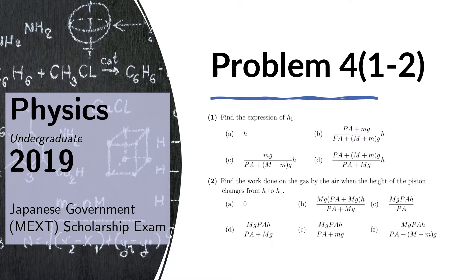For Question 1, we are asked to find the expression of H1. For Question 2, we are asked to find the work done on the gas by the air when the height of the piston changes from H to H sub 1.